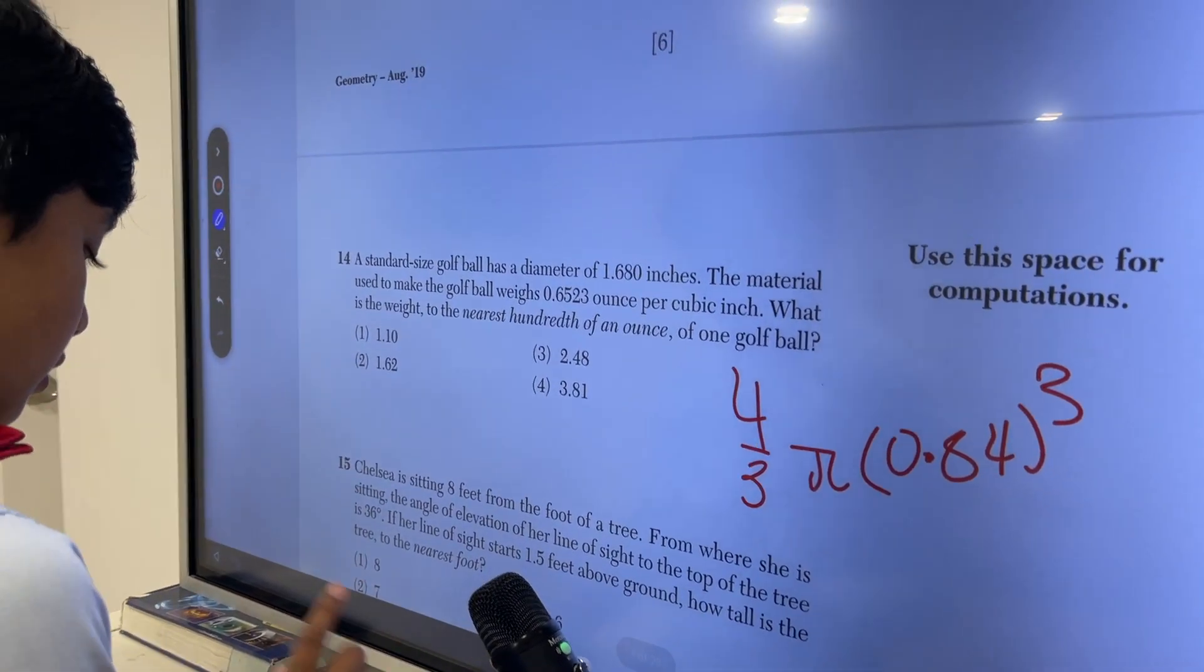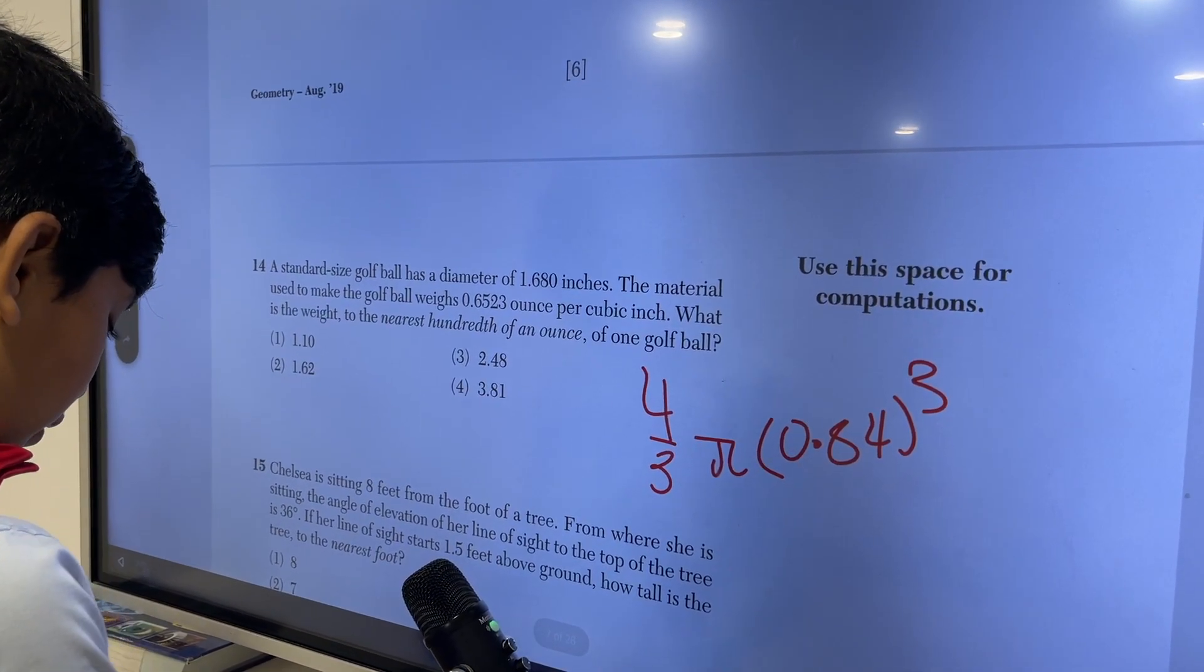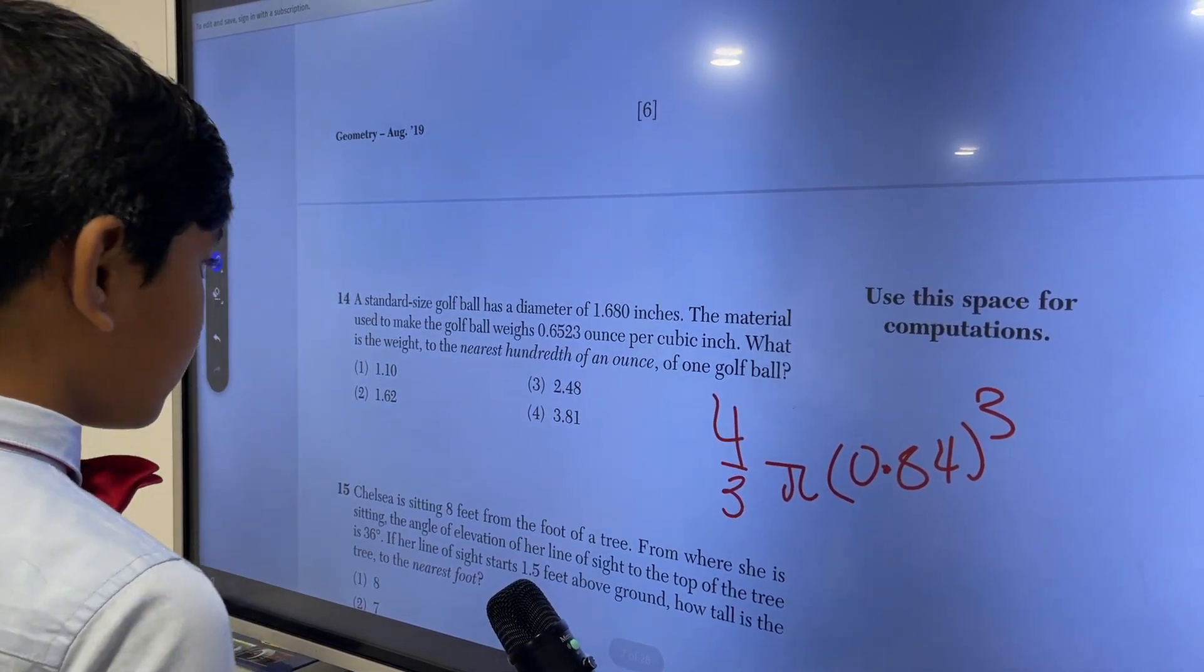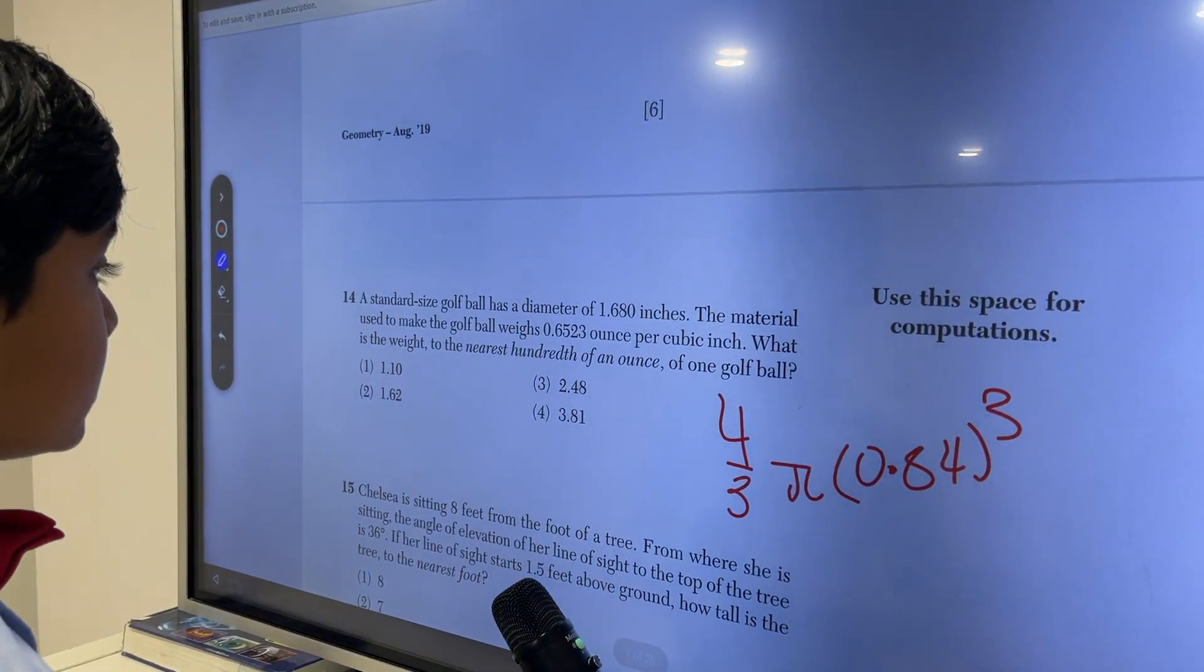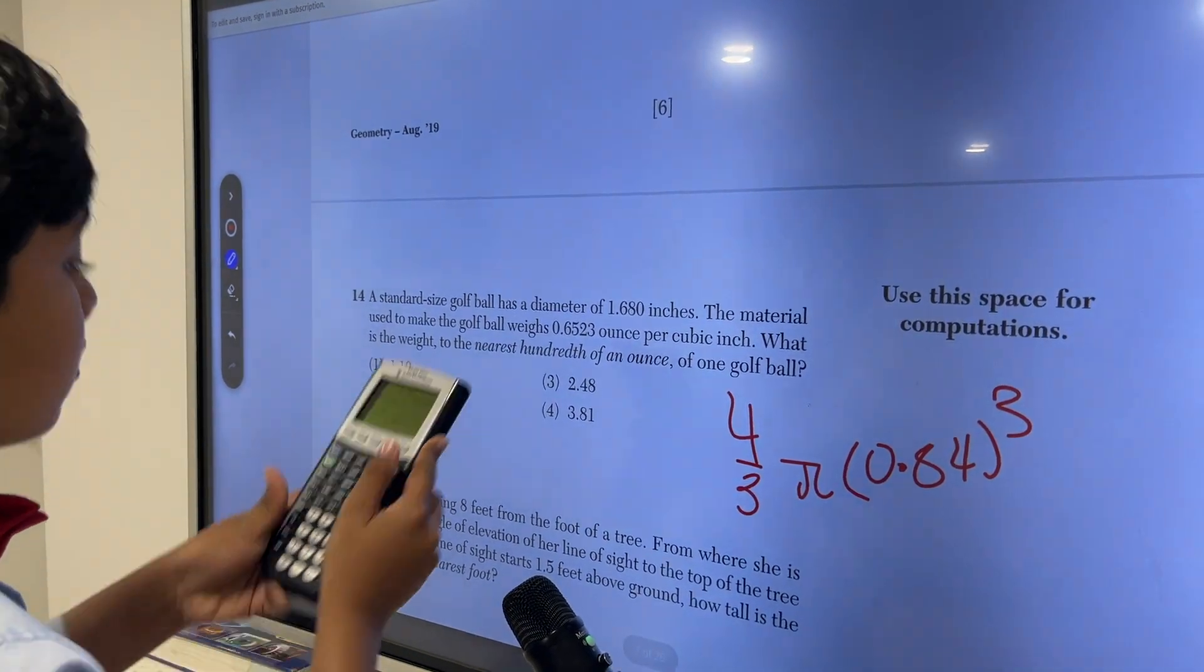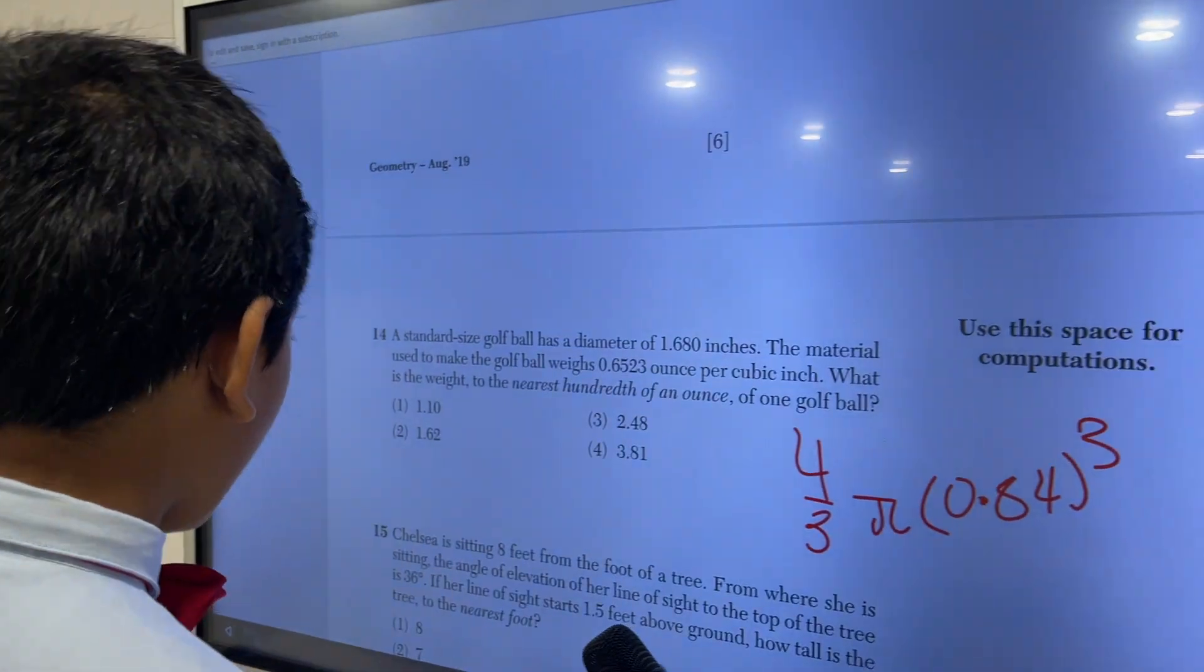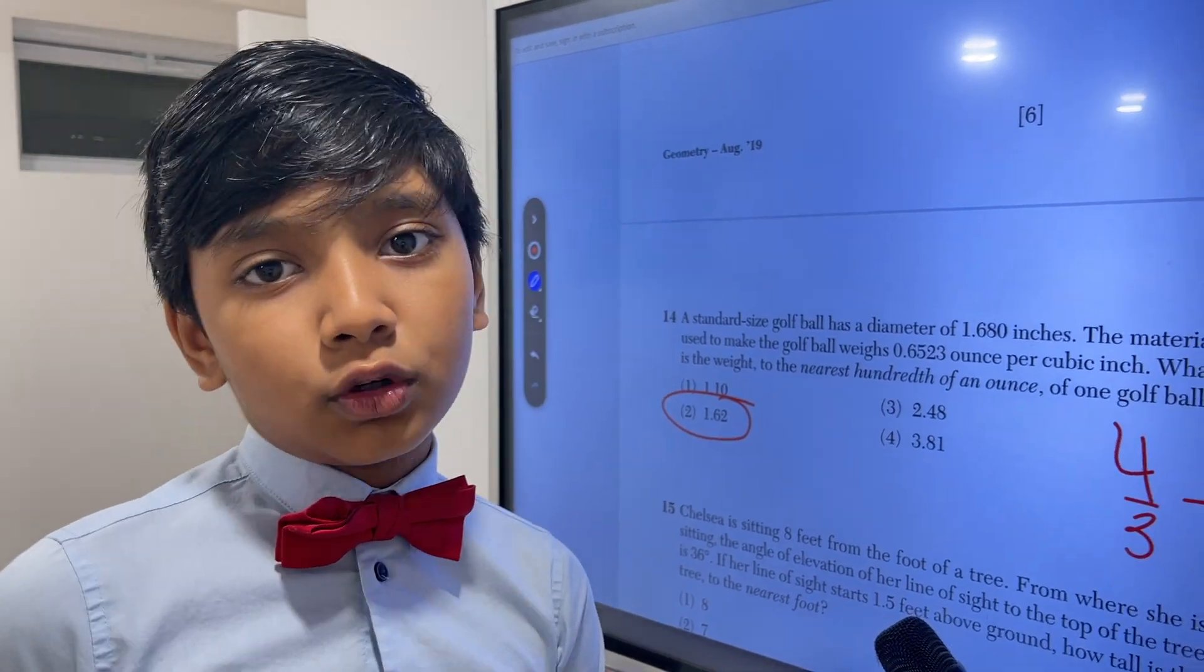Then multiply that by 4 divided by 3. Okay, and now multiply it by pi. Now that's how many cubic inches it is. Now it weighs 0.6523 ounces per cubic inch. So now we just need to multiply what we got by 0.6523, which is approximately 1.62. So 14 is 2, breaking our 4 streak just at the end.